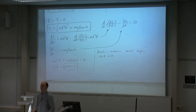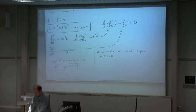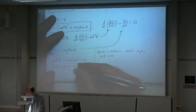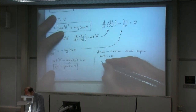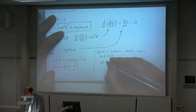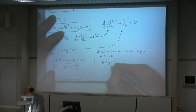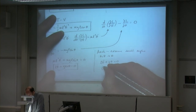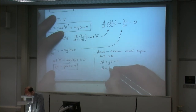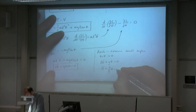If we assume small angles, sine theta becomes theta, and cosine theta becomes 1. Plugging small angles into the equation: L theta-double-dot + g theta = 0. Dividing both sides by L, we get theta-double-dot + (g/L) theta = 0.